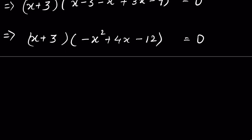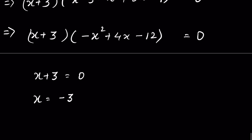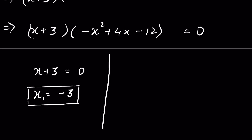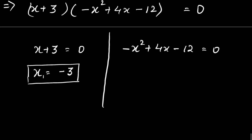We have two factors. When (x + 3) = 0, then x = −3. So x₁ = −3 is the first value of x. For the second factor, −x² + 4x − 12 = 0. Multiplying both sides by −1 gives x² − 4x + 12 = 0.